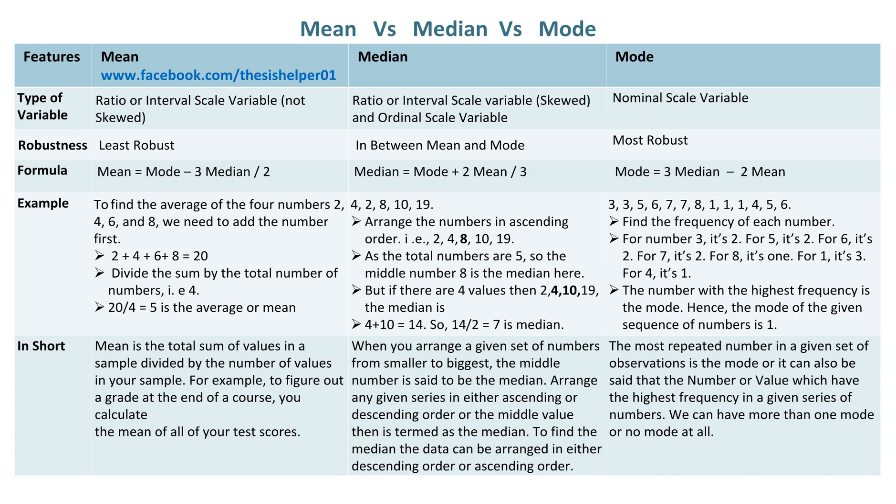In short, mean is the total sum of values in a sample divided by the number of values in your sample. For example, to figure out a grade at the end of a course, you calculate the mean of all of your test scores.